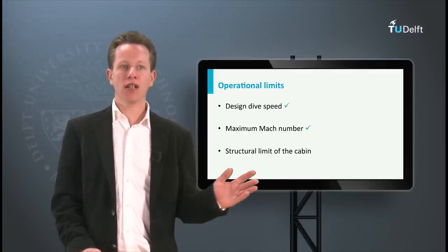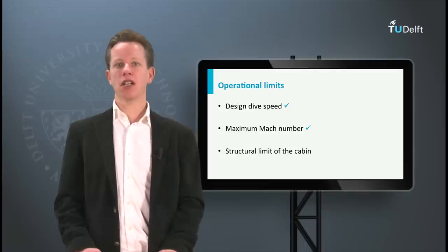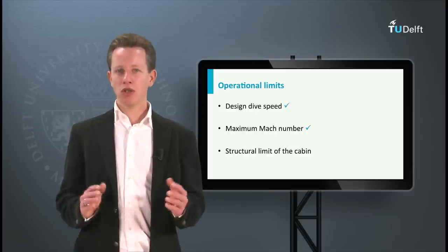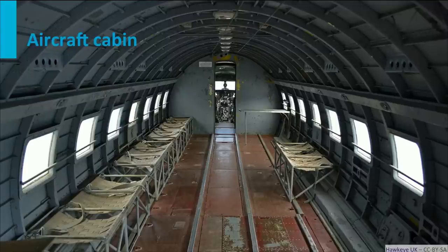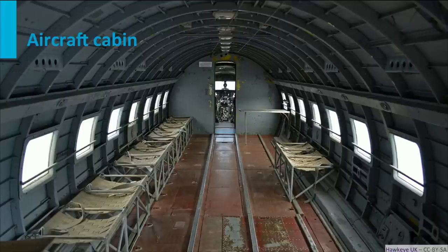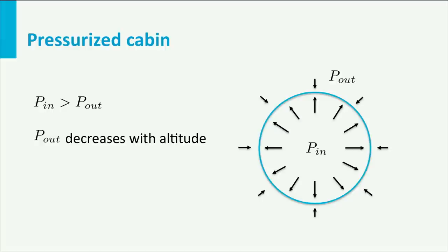Now let's have a look at the final operational limit, the limit associated to a pressurized cabin. Commercial aircraft typically fly at about 10 km altitude. In order to create a nice environment in the aircraft for the passengers, the cabin is pressurized. The difference between the internal pressure and the external pressure on the aircraft creates stresses in the fuselage structure. The fuselage structure is designed for a maximum pressure differential. This means there is a maximum flight altitude at which the aircraft is allowed to fly before the pressure differential becomes too large.